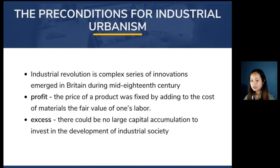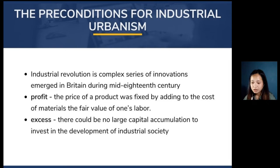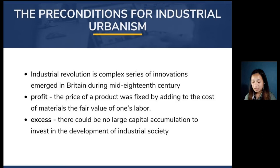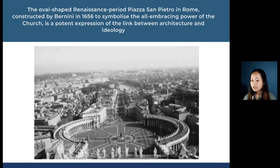The preconditions of industrial urbanism: the industrial revolution involved a complex series of innovations that emerged in Britain during the mid-18th century. In medieval Europe, profit was an alien concept among artisans; the price of a product was fixed by adding to the cost of materials the fair value of one's labor. Profit is defined as the excess of the selling price of goods over their cost. Figure 3.2 shows the oval-shaped Renaissance period piazza San Pietro in Rome, constructed by Bernini in 1656 to symbolize the all-embracing power of the church, and is a potent expression of the link between architecture and ideology.